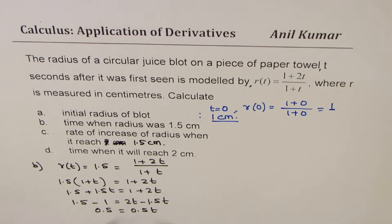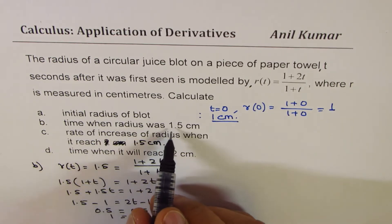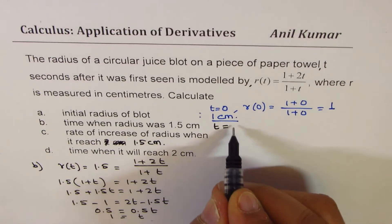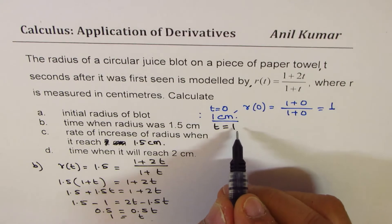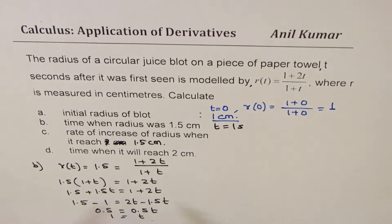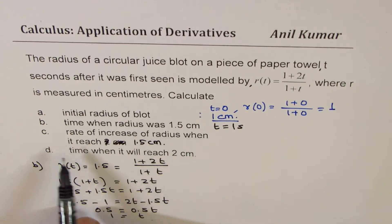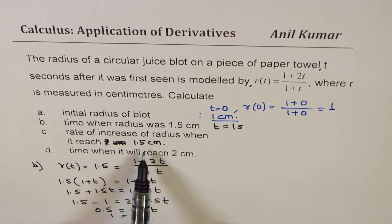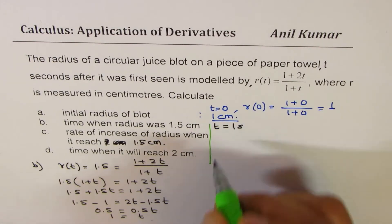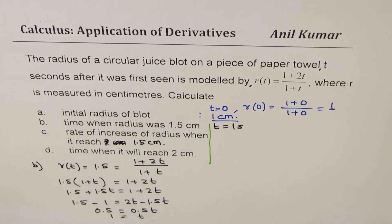So t = 1. The answer is t = 1 second. Now see, rate of increase of radius when it reaches 1.5 centimeters - rate of increase means we have to find the derivative, correct?